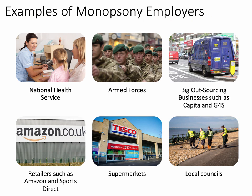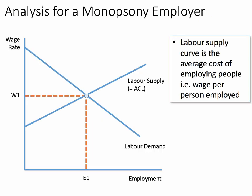Now let's move on to the analysis. We're going to work our way through to show how a monopsony may pay a wage that is lower than the true marginal revenue product of the people they employ.